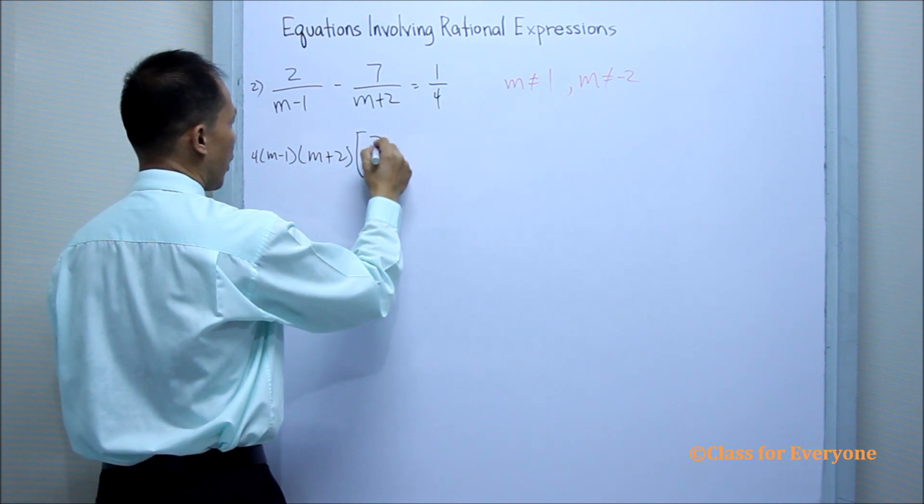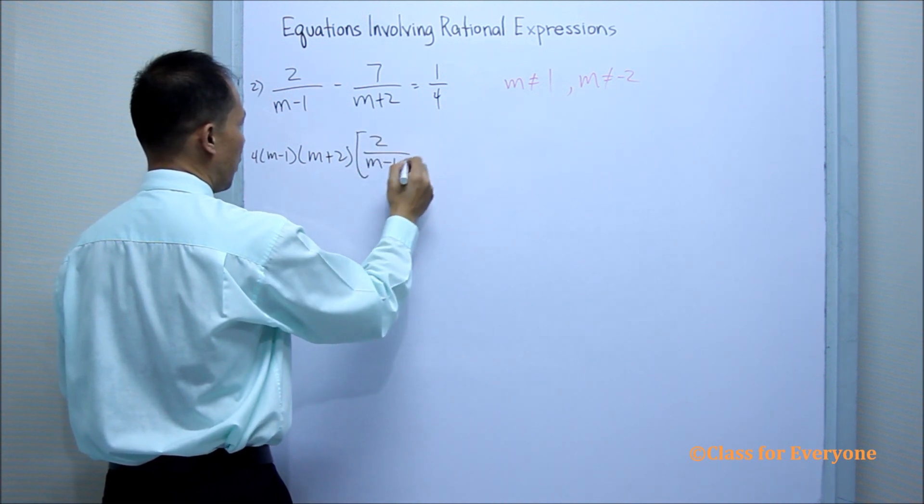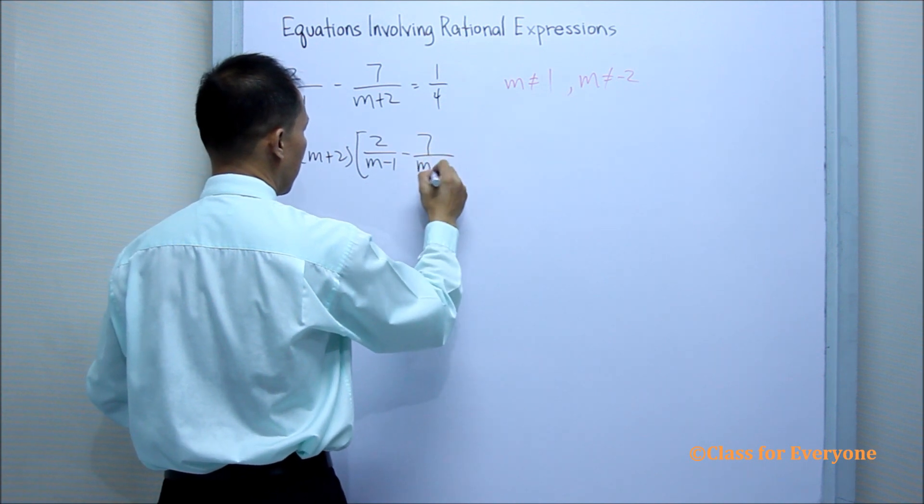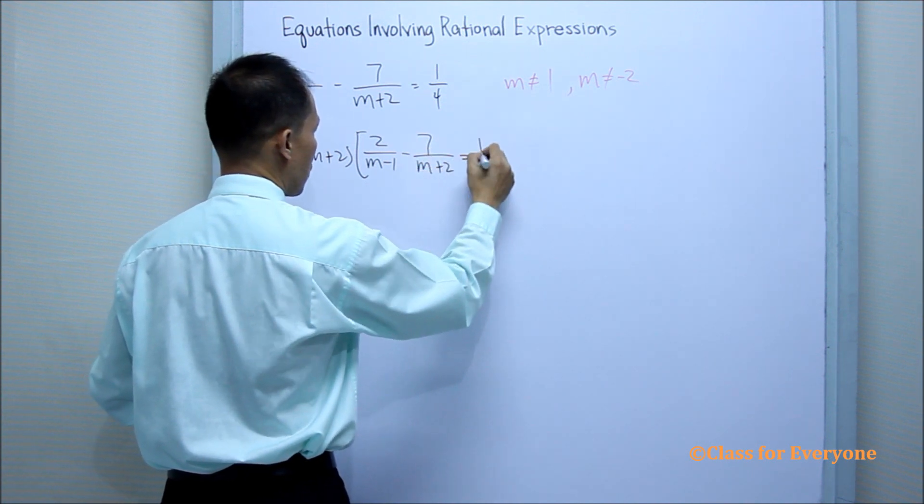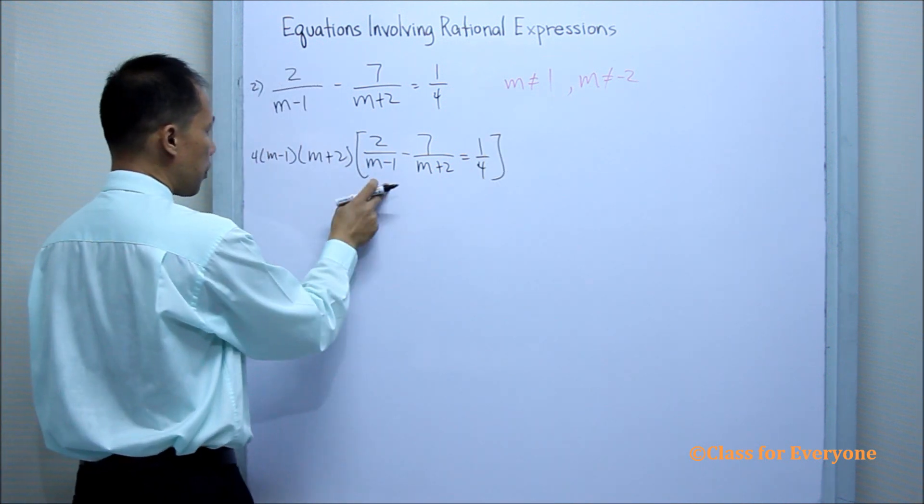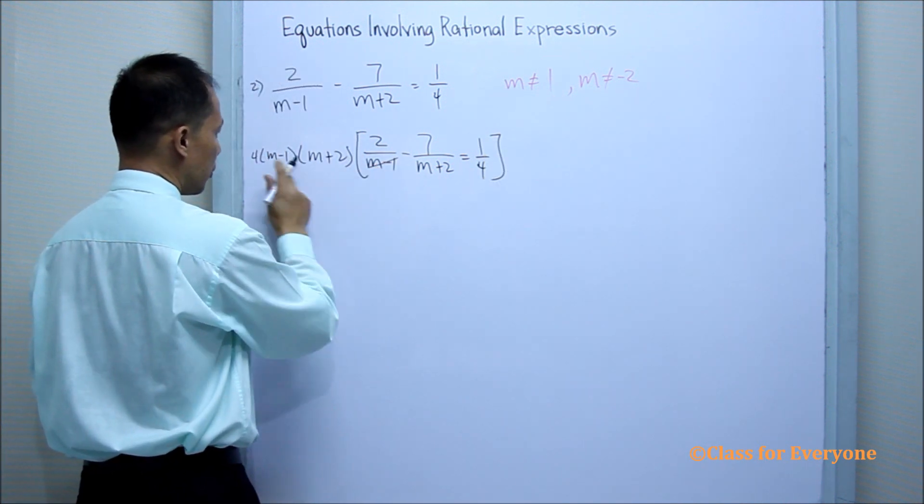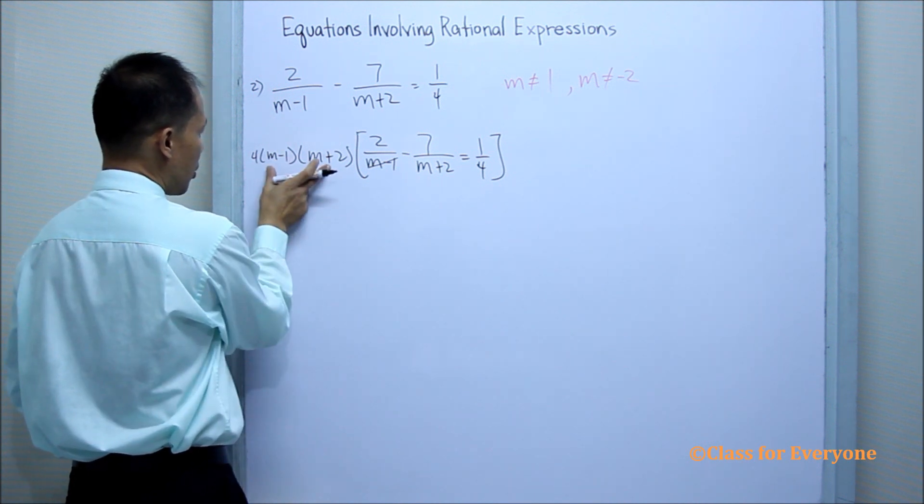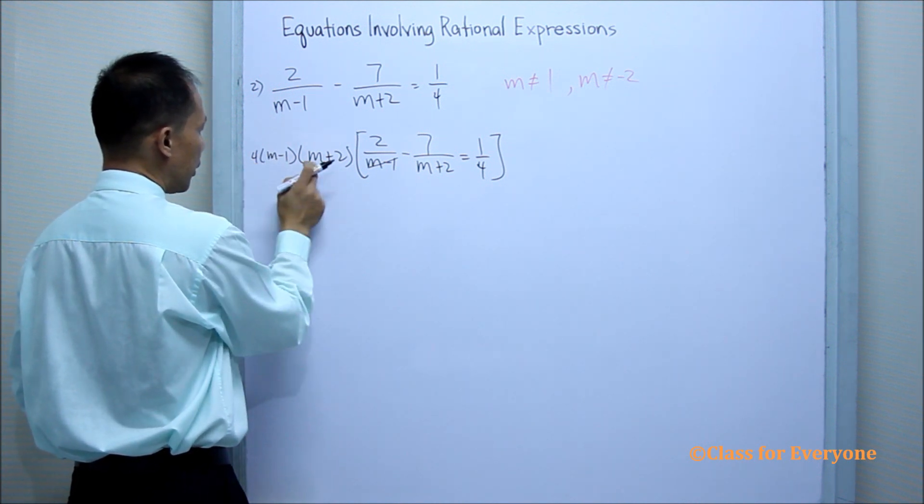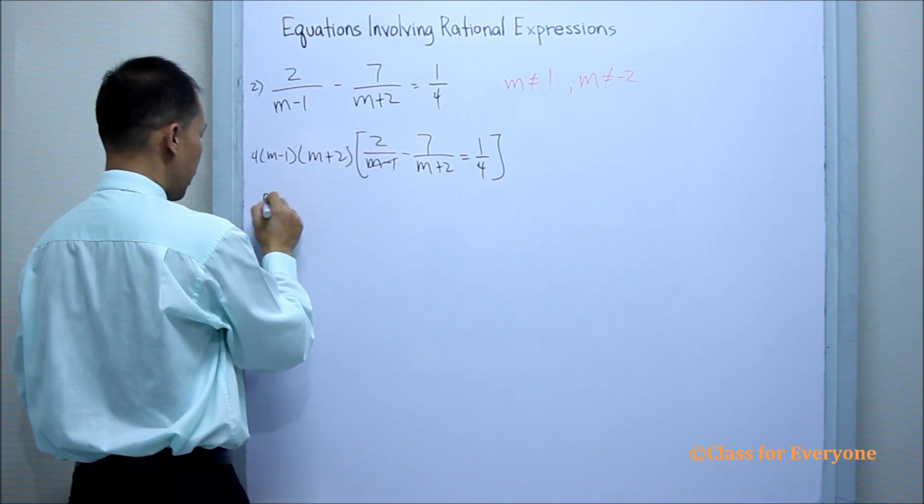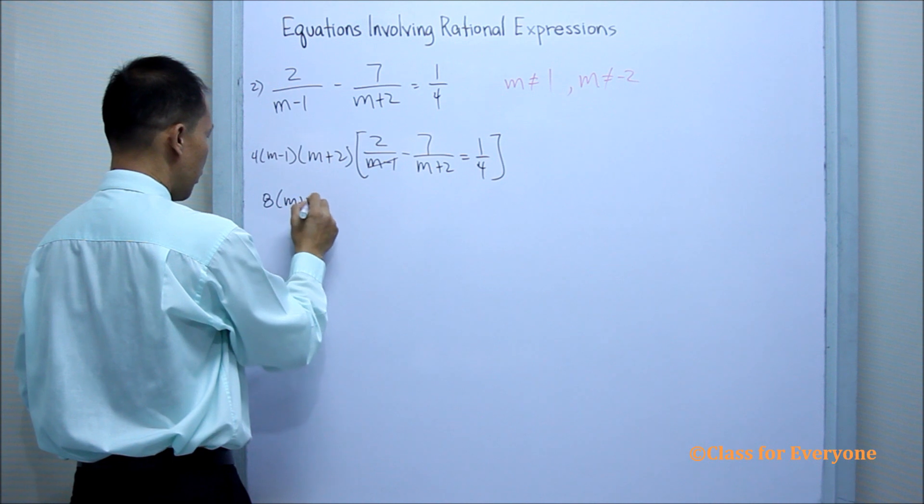the equation 2 over m minus 1 minus 7 over m plus 2 equals 1 over 4. By distributive property, we can divide this one. So the remaining LCD now will be 4 times m plus 2 times 2. So we will have 8 times m plus 2.